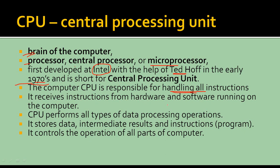The CPU receives instructions from the hardware and software running on the computer. For example, clicking a mouse becomes an instruction to the CPU. If we double-click on My Computer, the My Computer icon opens — we are inputting a command to show us the files, and the computer showing us those files becomes the output. CPU performs all types of data processing operations: character data, numerical data, integer values, floating point values — this kind of data. The CPU stores intermediate results and instructions as well.